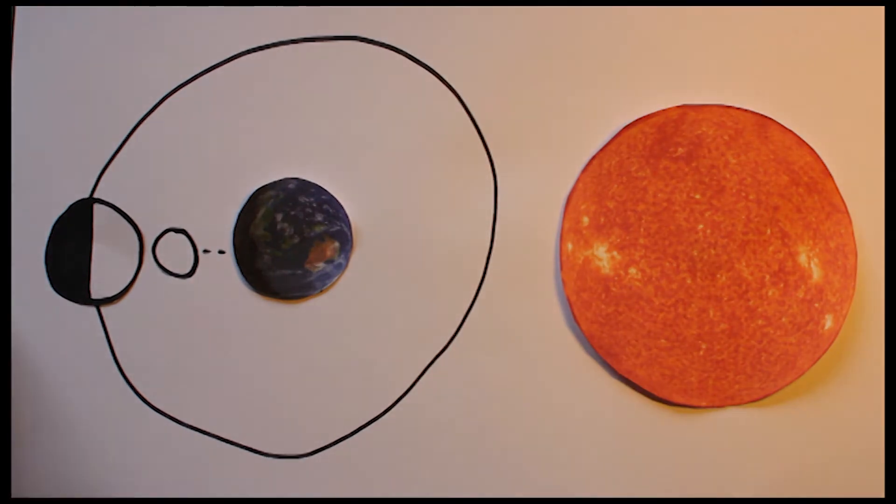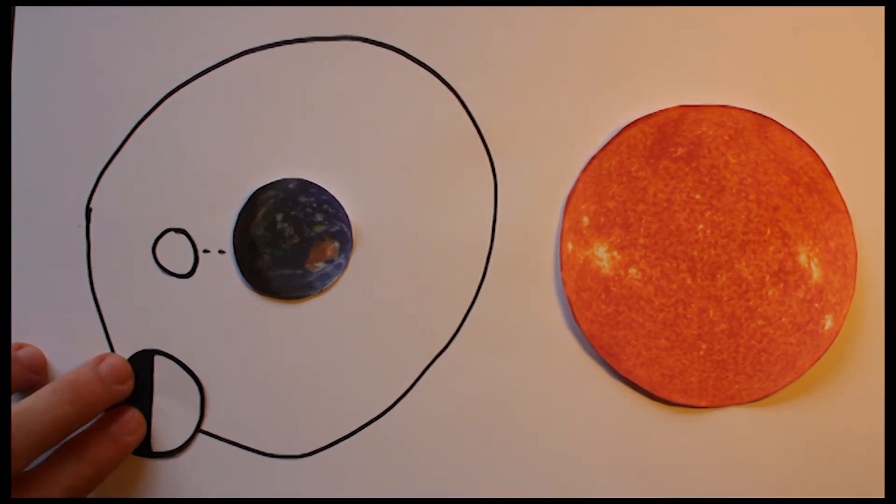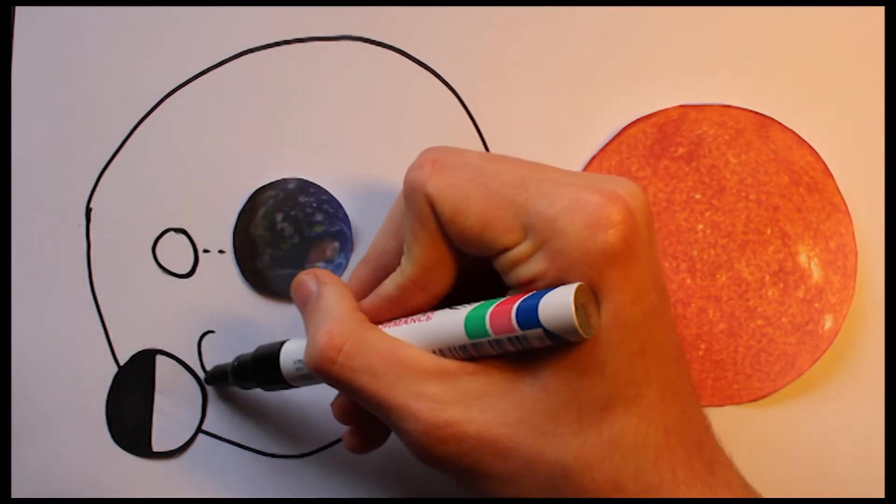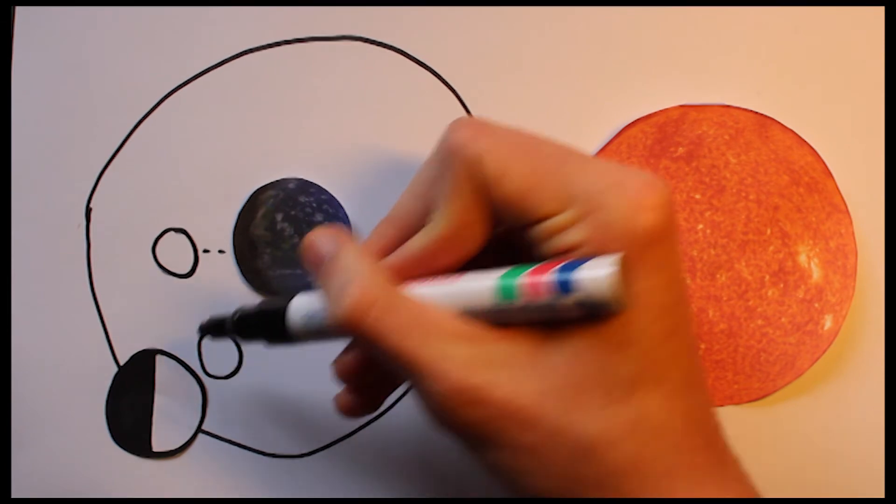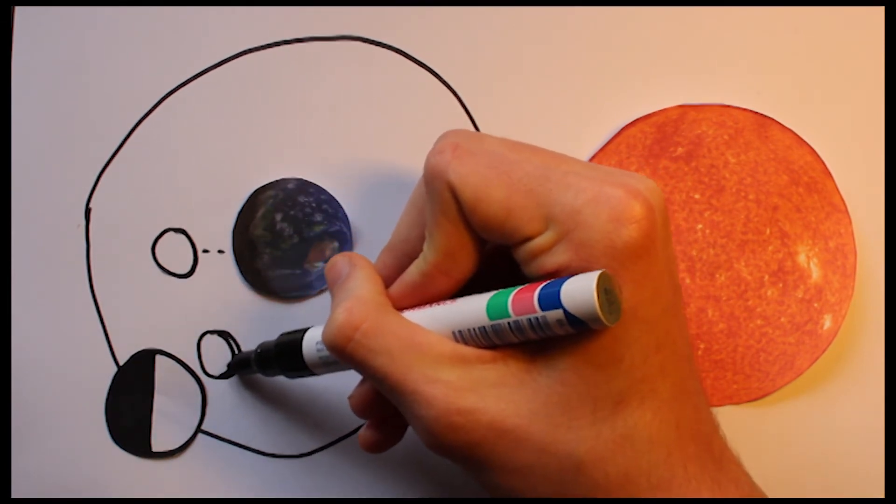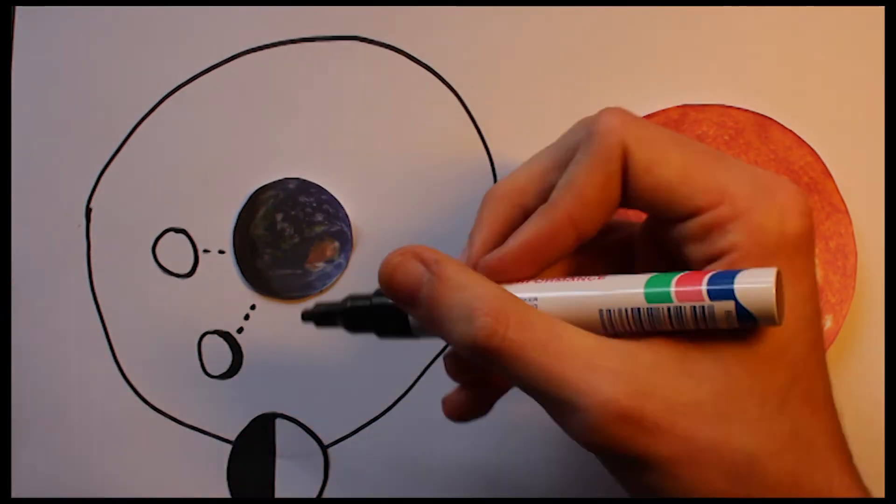Now as it orbits, from this perspective we observe a waning gibbous. Half the Moon is still illuminated, just it is no longer visible to us. And due to the rotation of the Moon on its axis, the half of the Moon facing Earth, illuminated and dark, is the face which we saw during the full Moon.